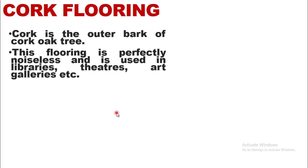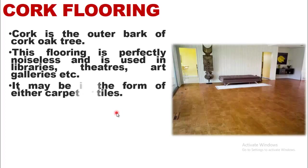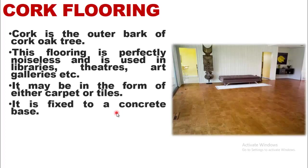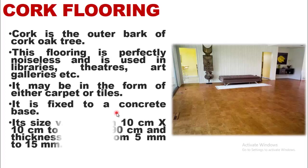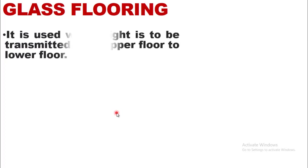Cork flooring uses cork, which is the outer bark of the cork oak tree. This flooring is perfectly noiseless and is used in libraries, theaters, and art galleries. It may be in the form of carpet or tiles, fixed to a concrete base. Size varies from 10×10 cm to 30×90 cm, with thickness varying from 5 mm to 15 mm.